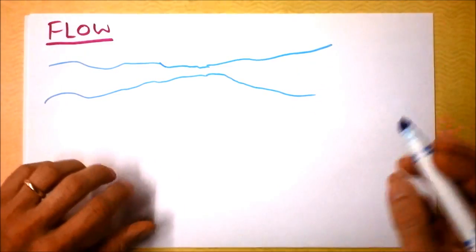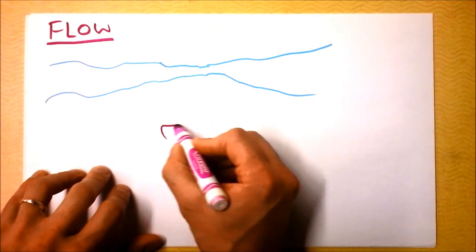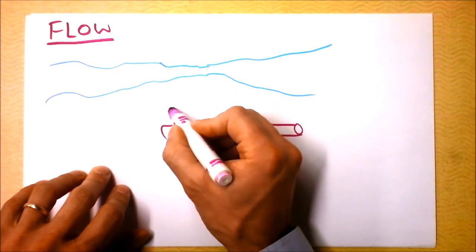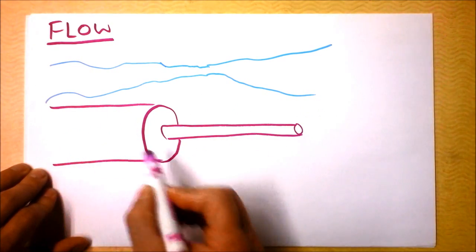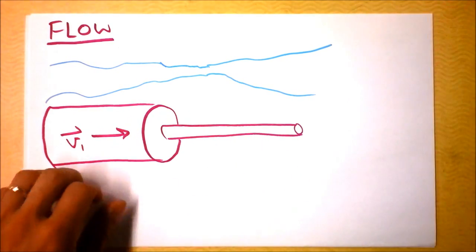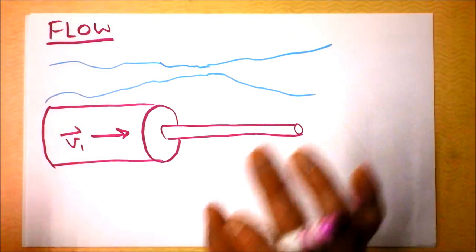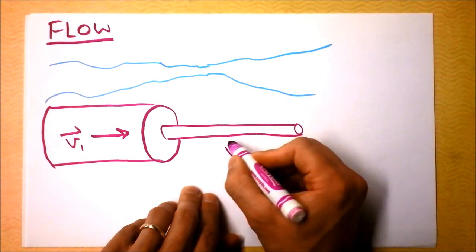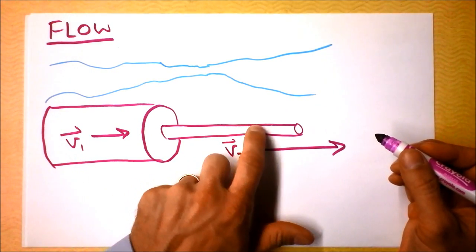That's a general principle of fluids. I'm going to draw you a tube — it's kind of a funky tube — but the idea is that it starts out with a very large diameter on the left and then shrinks to a smaller diameter on the right. Over here I've got V1, that's the speed of the fluid. And you know that over here, V2 is going to be much bigger, correspondingly, because the tube has narrowed.